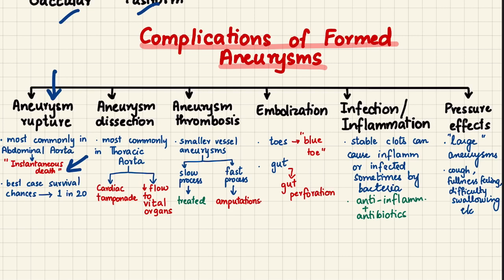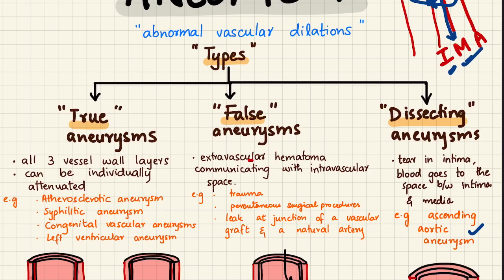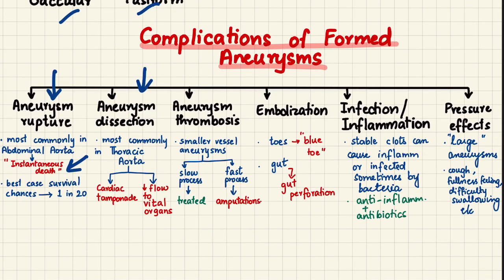The second complication is that dissecting aneurysms can progress to full-blown dissections — blood no longer just pools but continues flowing between the intima and media. This most commonly occurs in the thoracic aorta, which is the ascending aorta originating directly from the heart.